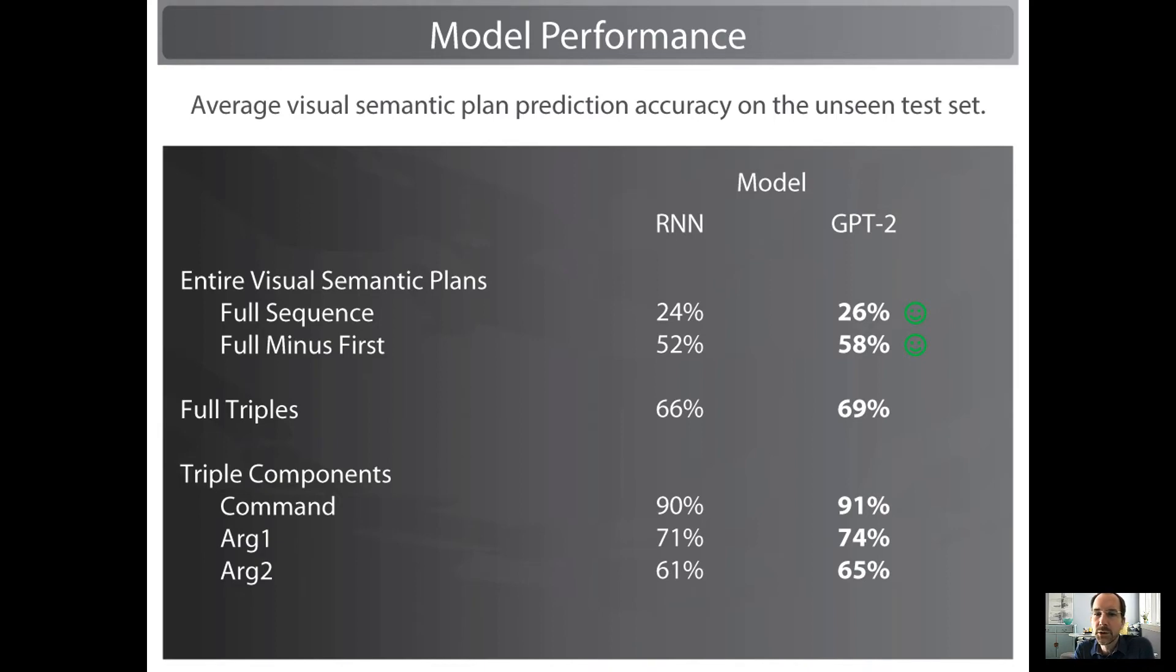GPT-2 is weakest on the first command, which is nearly always a go-to command to go to the starting location of the action sequence. If you take that one out, simulating the model having a very small amount of visual input—namely the starting location of the action sequence—the performance more than doubles, successfully recovering 58% of gold command sequences, which is more than half, which is really sort of wild.